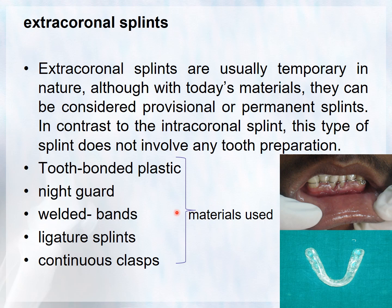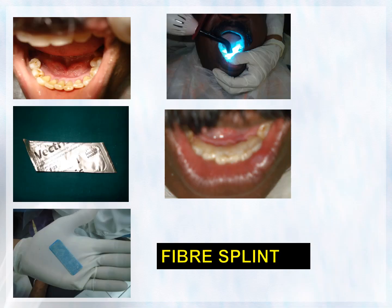In periodontics, the most commonly used splint is the fiber splint. This fiber splint comes in a defined width and can be cut to the required measurement. A layer of composite is applied over the tooth surface, then the fiber is placed over it, adapted, and cured. This is how fiber splinting is performed in the department.